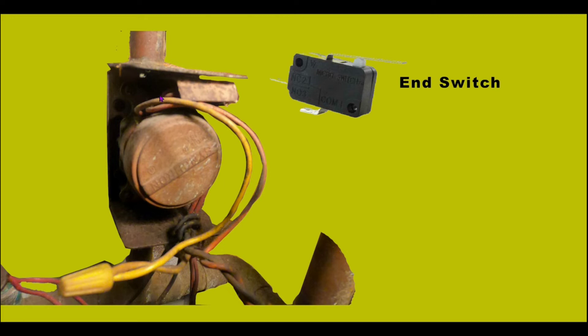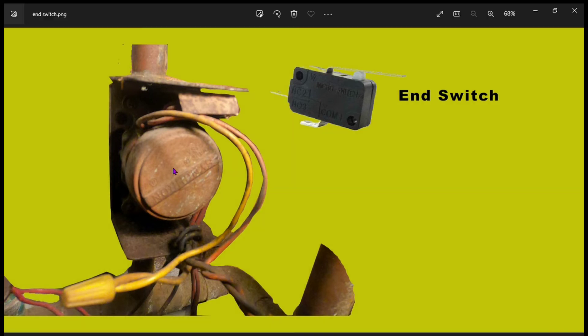Once power is applied to this motor via the thermostat, it moves an actuator which allows the flow of water to go to that particular zone. In addition to that, it triggers this end switch.